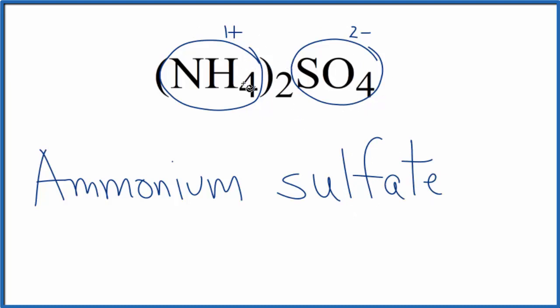This is considered an ionic compound because we have these ions here. So even though these are all nonmetals, still an ionic compound, we're calling this ammonium sulfate.